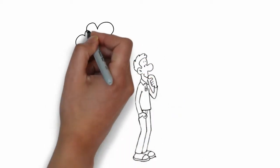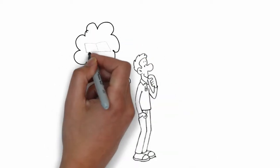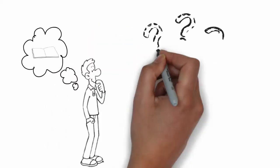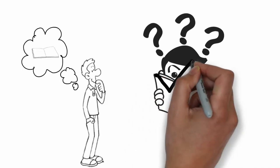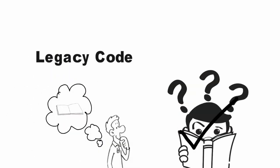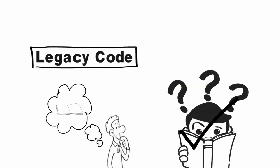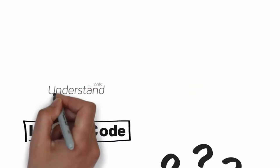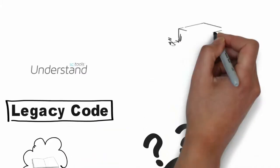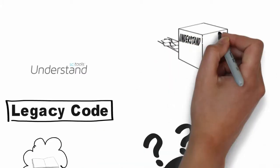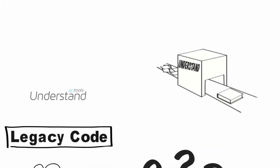Have you ever thought of your legacy source code as a book? Some books are a lot harder to read than others. We make a tool for legacy code called Understand that helps make sense of your code, no matter how complex or messy it may be.